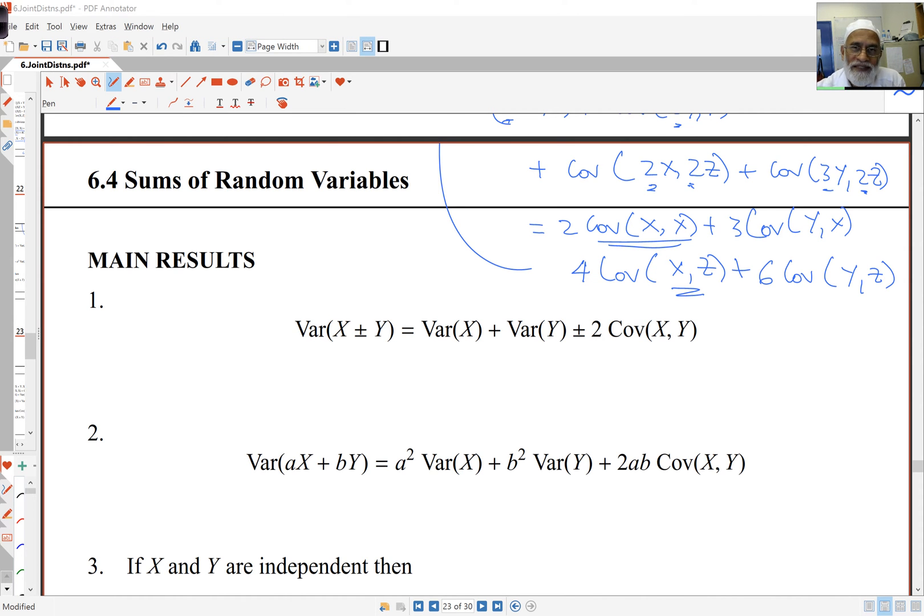Hello again. We're looking now at sums of random variables. So the simple result is this: I'm looking at the variance of a sum. Variance of x plus y is variance of x plus variance of y plus twice the covariance.